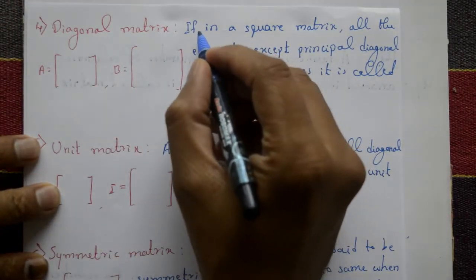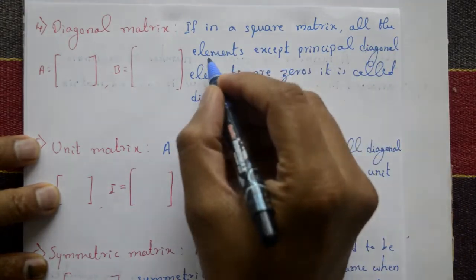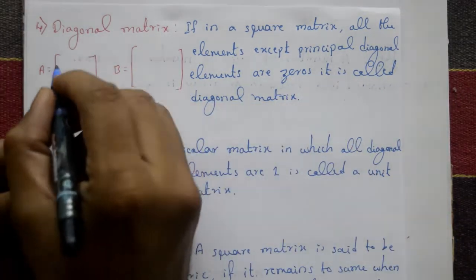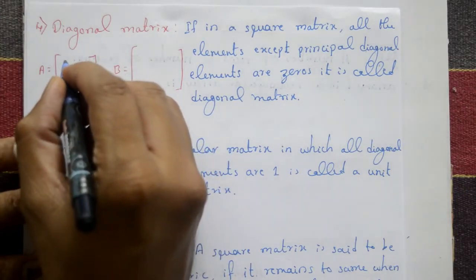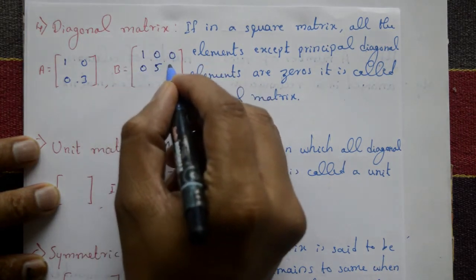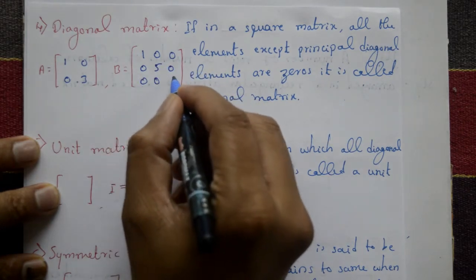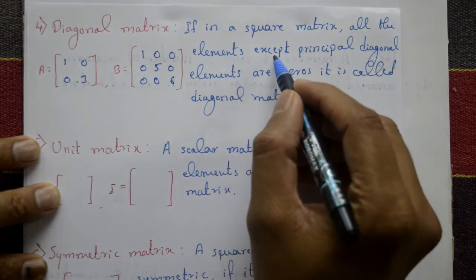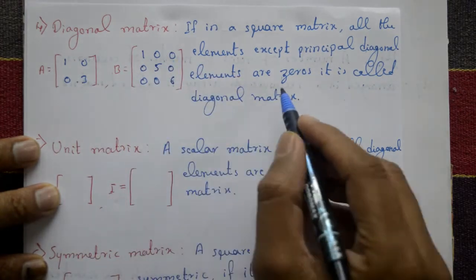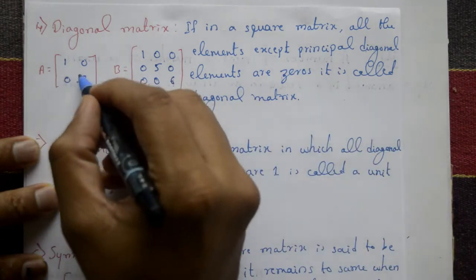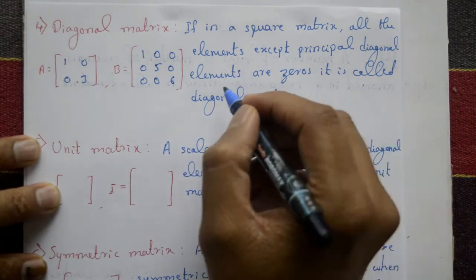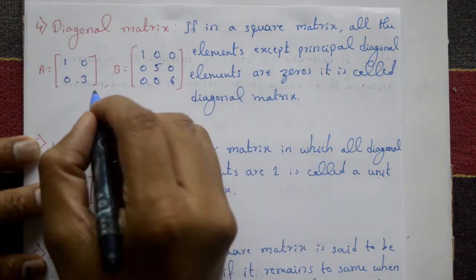Fourth type: diagonal matrix. In a square matrix, if all elements except the principal diagonal elements are zero, it is called a diagonal matrix. Example: matrix A is [1, 0; 0, 3] and matrix B is [1, 0, 0; 0, 5, 0; 0, 0, 6]. The principal diagonal elements are non-zero and all other elements are zero. A diagonal matrix is also a square matrix — matrix A is 2×2 order and matrix B is 3×3 order.